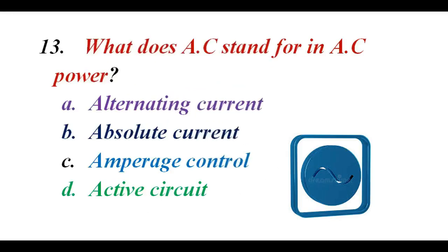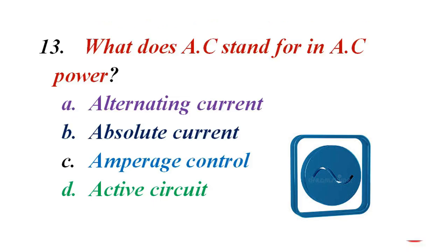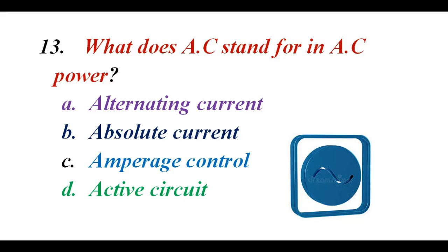What does AC stand for in AC power? A. Alternating current. B. Absolute current. C. Amperage current. D. Active circuits. The correct answer is A. Alternating current.